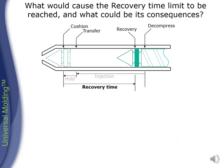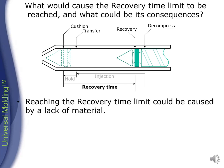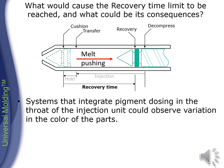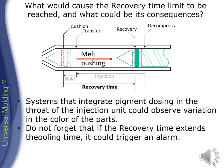What would cause the recovery time limit to be reached, and what could be its consequences? Reaching the recovery time limit could be caused by a lack of material. The melt in front of the check ring pushes the screw towards the recovery position, and if the resin feed is interrupted, the recovery time will extend. Systems that integrate pigment dosing in the throat of the injection unit could observe variation in the color of the parts. Do not forget that if the recovery time extends the cooling time, it could trigger an alarm.